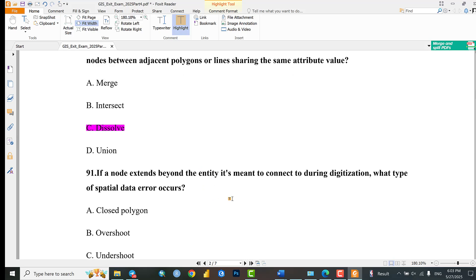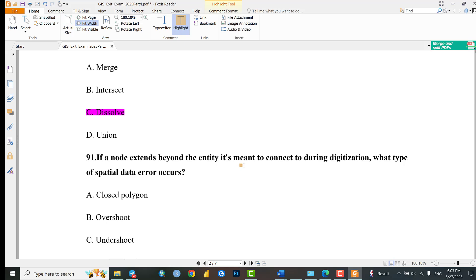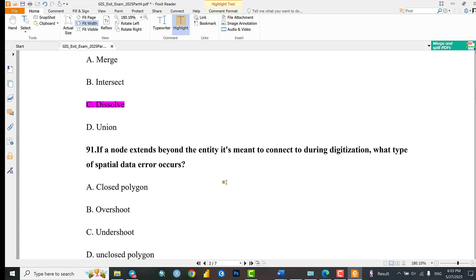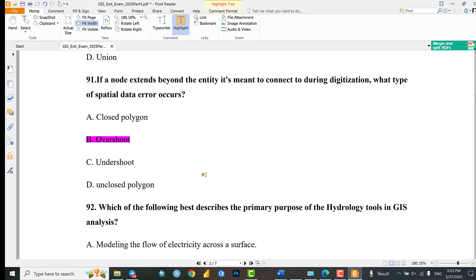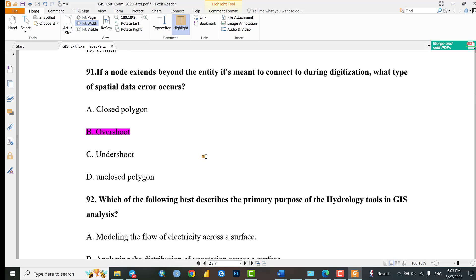Question 91: If a node extends beyond the entity it's meant to connect to during digitization, what type of spatial data error occurs? Options: Closed polygon, overshoot, undershoot, unclosed. The answer is overshoot, the error during digitization if the node extends.